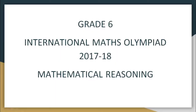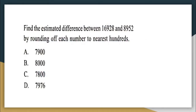Hello children. In this video we will solve questions that were asked in the International Maths Olympiad 2017, from the mathematical reasoning section for standard six. Let's look at the questions. The first question is there on your screen: find the estimated difference between 16928 and 8952 by rounding off each number to the nearest hundred.